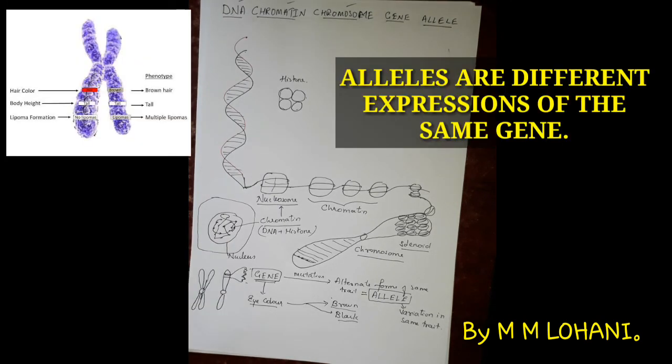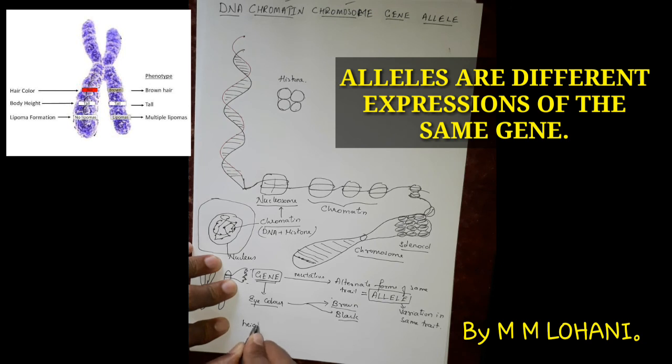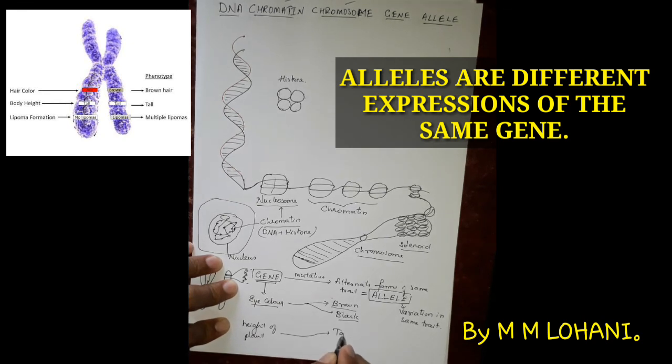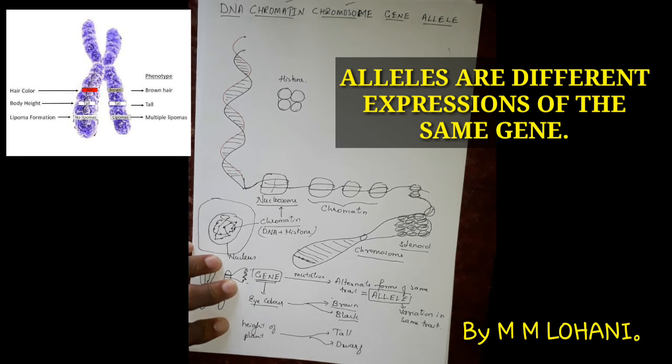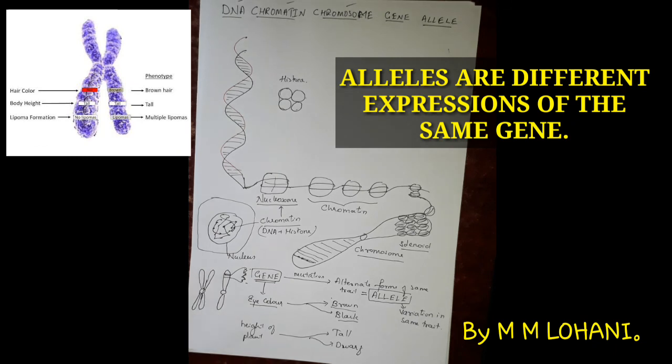Similarly, while discussing about Mendel's laws, you will come across the height of the plant. The height of the plant is the gene. So it will have two alleles - whether it can be a tall plant or a dwarf plant. So these are the two alleles of the height. You can say alleles are the different expressions of the same gene.